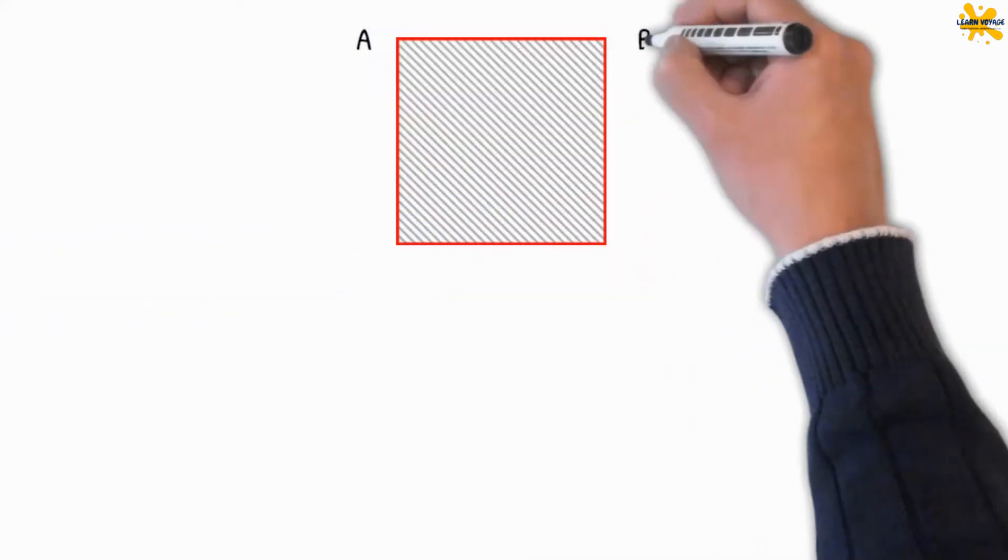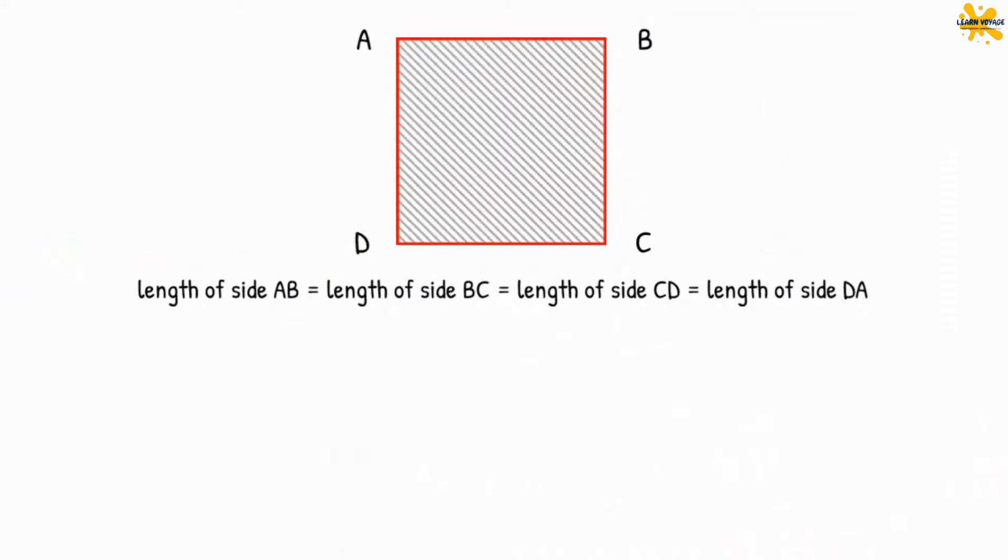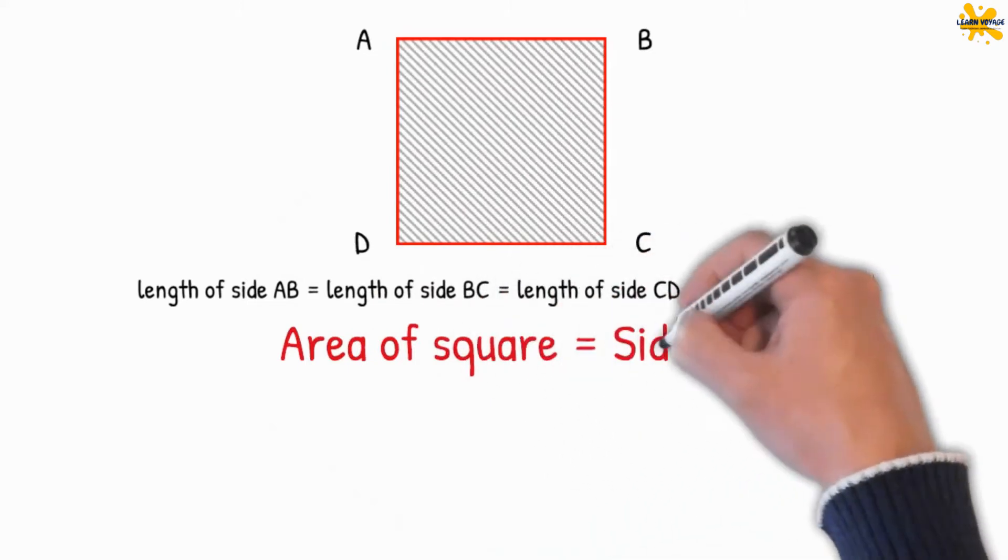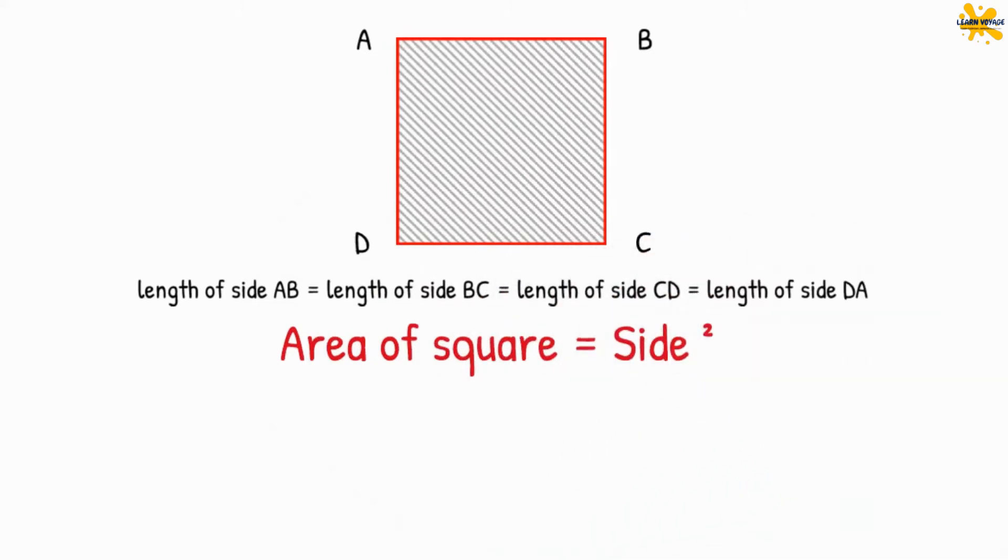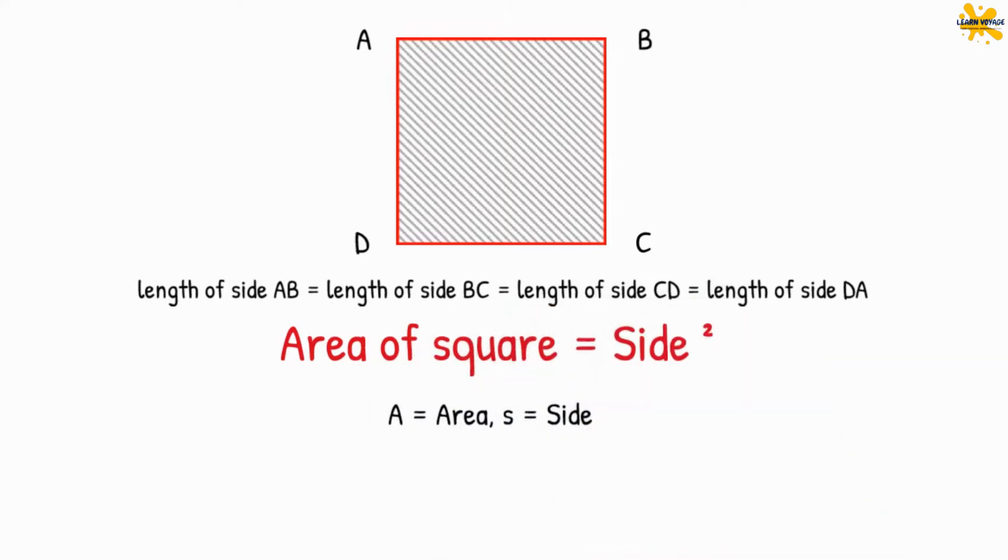The formula to find the area of a square is the length of one side into the length of another side. The equation can be simplified as side squared. We will use abbreviation A for area and S for side. Hence, we will write the formula for the area of the square as A equals side S squared.